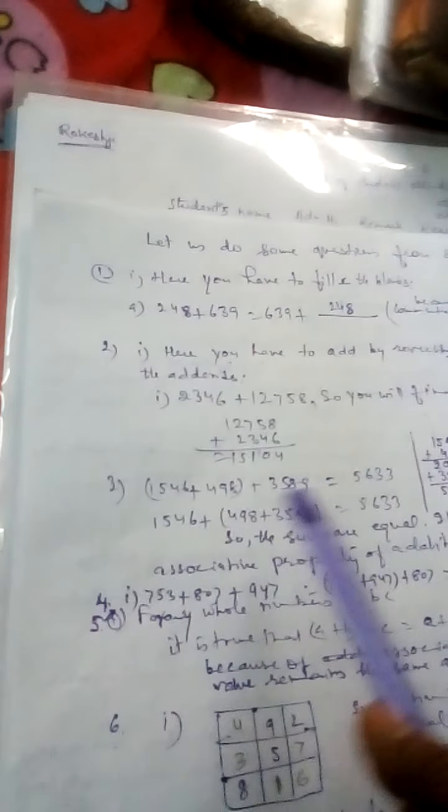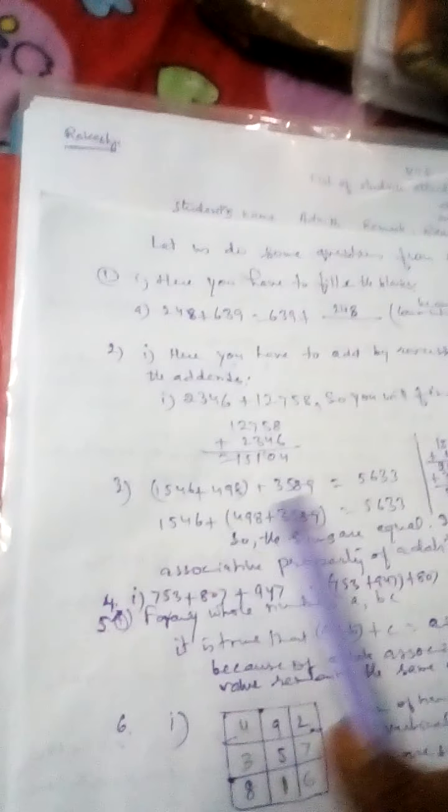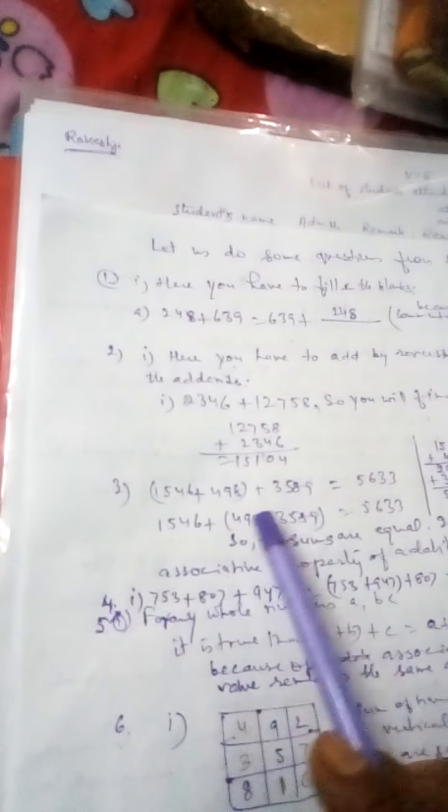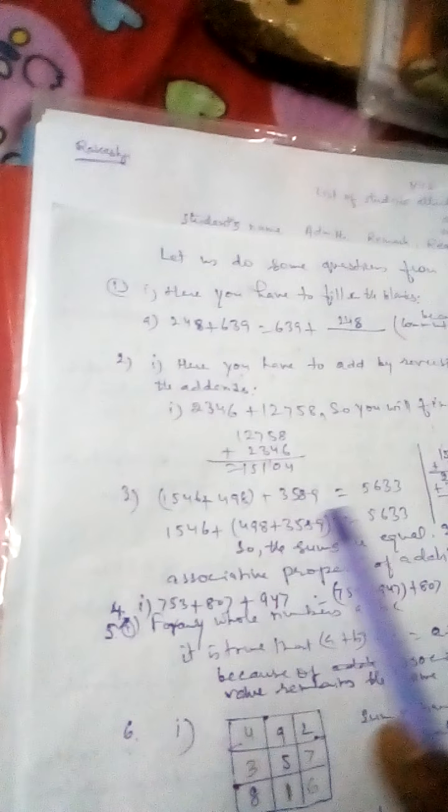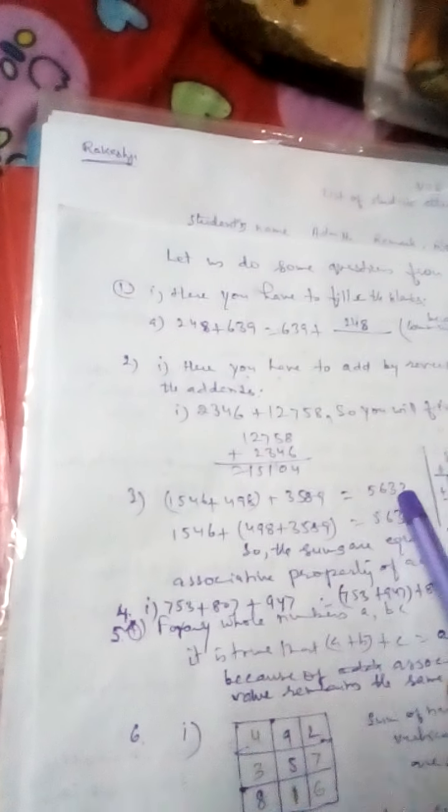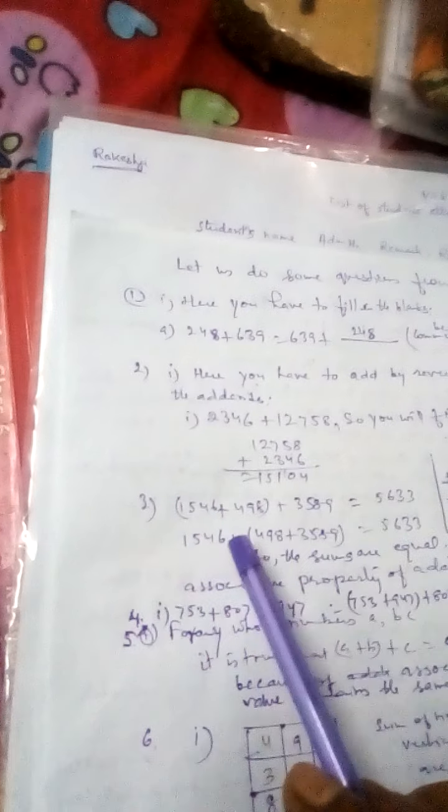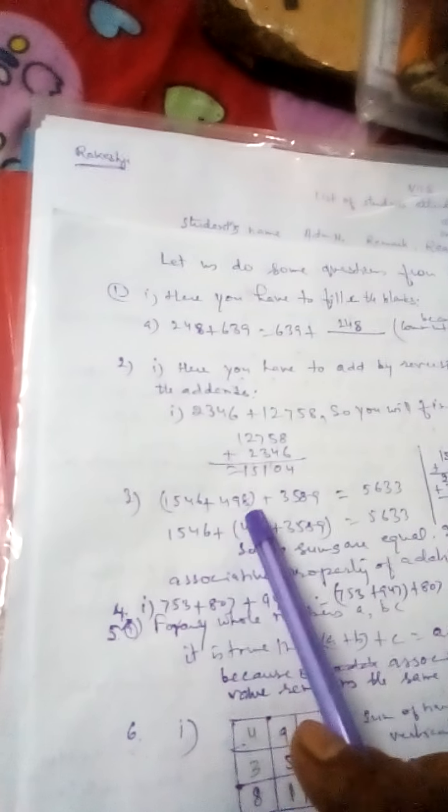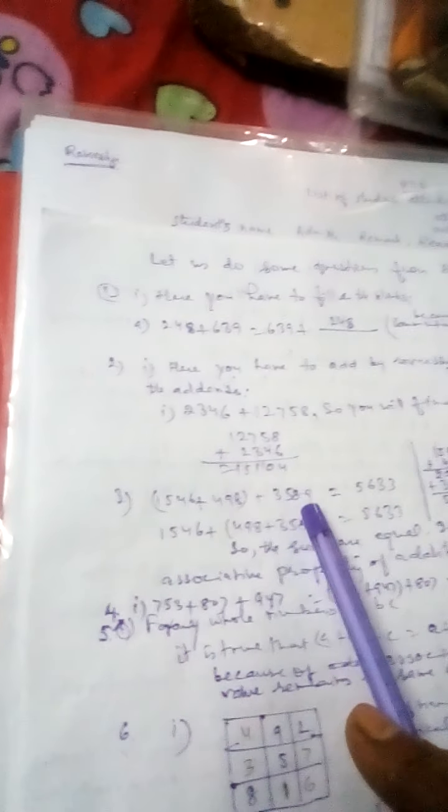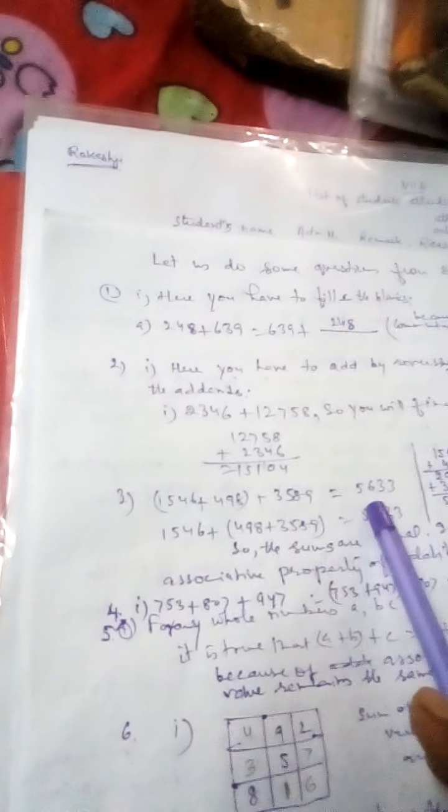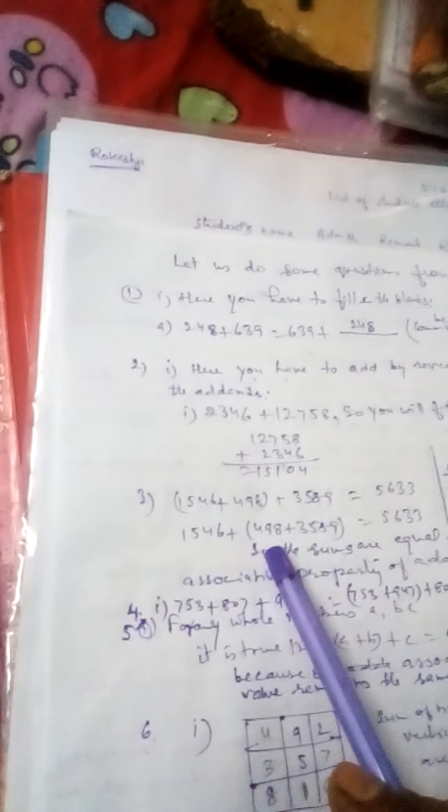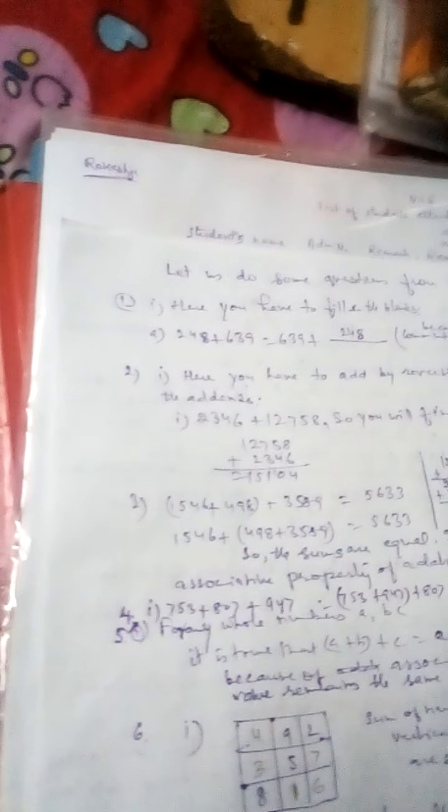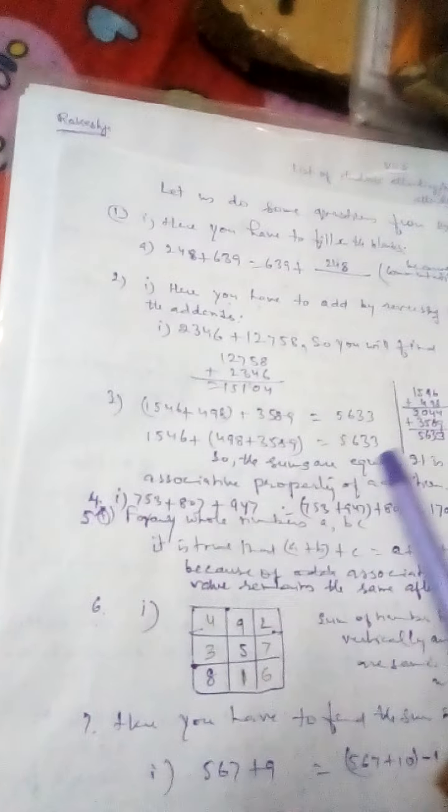Now you have to see question number 3, in two ways with the help of associative law. Values of three numbers are to be added. And in both cases, you will find that the sum is equal. Like 1546 plus 498 plus 3589, that is equal to 5633. If you change the association of addition, then again the value will be 5633.